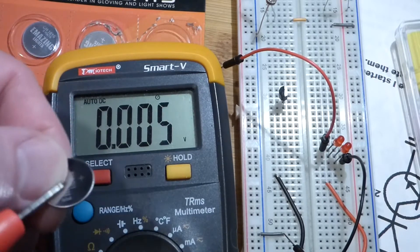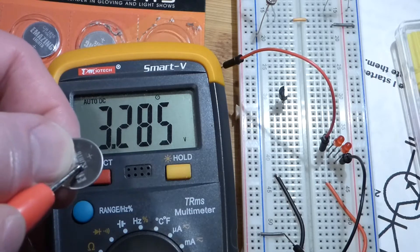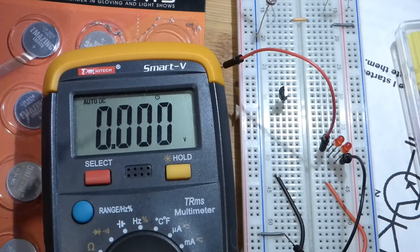So I got the black probe on the rough area on the back and there we got the red. We can see we got 3.285 volts, so practically 3.3 volts.